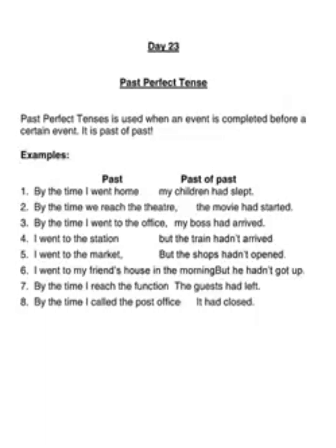Third: 'By the time I went to the office, my boss had arrived.' He had already arrived by that time, which means it's past of past. For example, you went to the office at nine o'clock but your boss arrived at eight o'clock. Because your boss arrived at eight — before nine — you must say 'my boss had arrived,' not 'my boss arrived,' because that is past of past. Fourth: 'I went to the station but the train hadn't arrived' — this is negative past perfect.